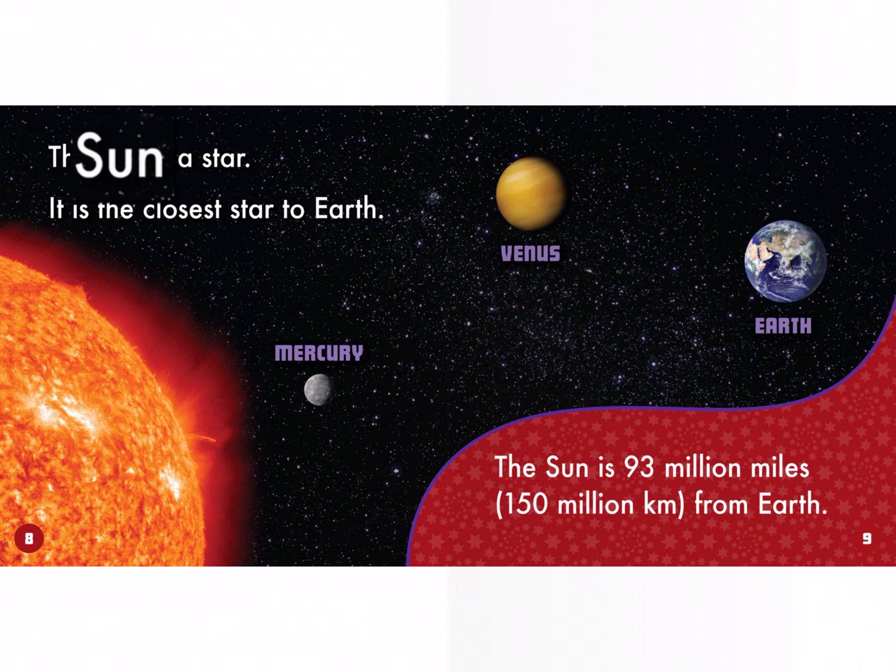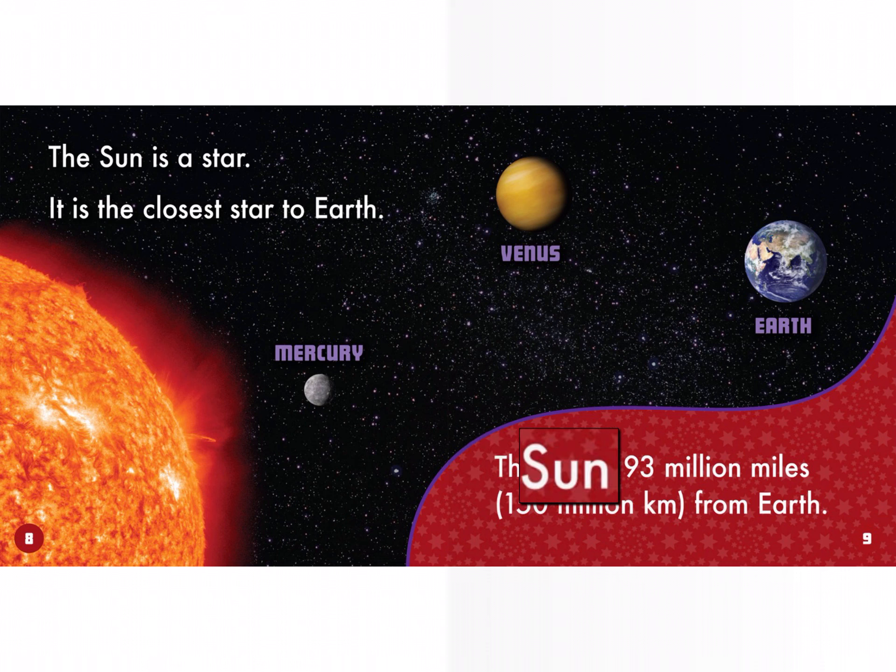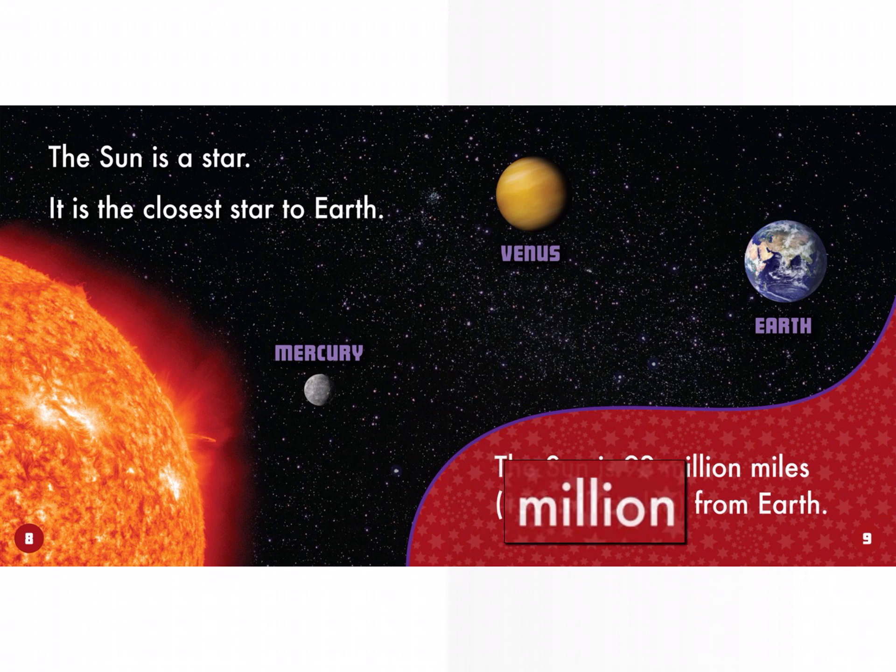The Sun is a star. It is the closest star to Earth. The Sun is 93 million miles, 150 million kilometers from Earth.